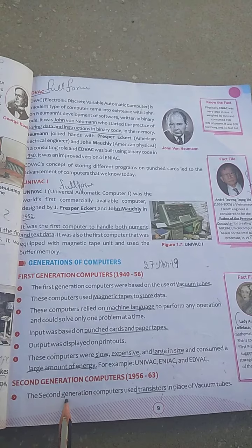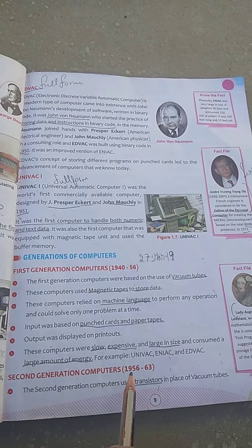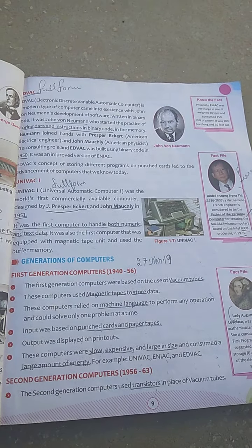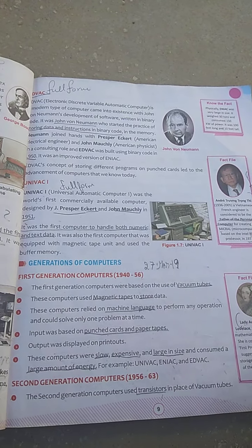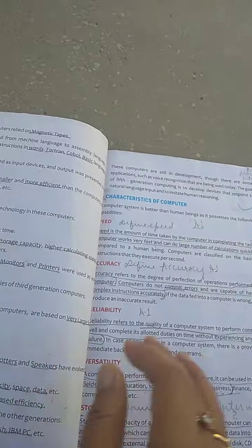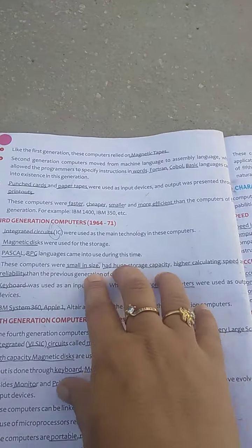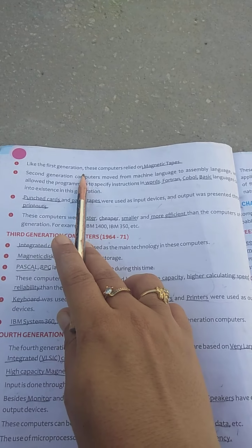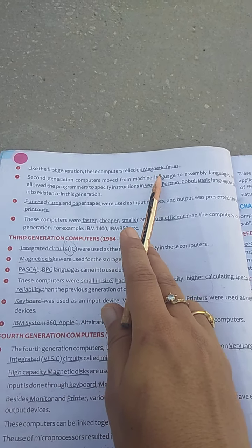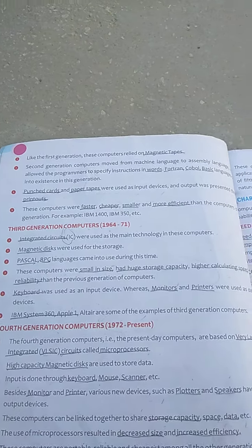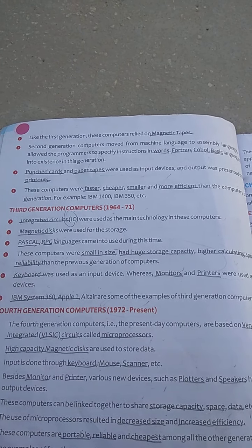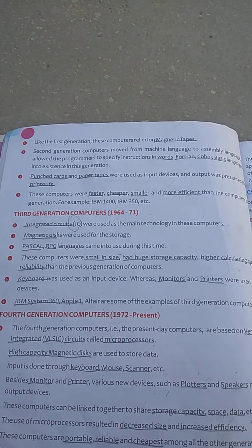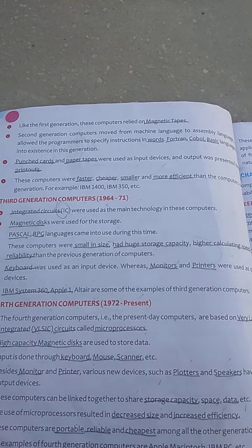The second generation of computers was from 1956 to 1963. These computers used the technology of transistors instead of vacuum tubes. Like first generation computers, these computers relied on magnetic tapes. Magnetic tapes are small, thin plastic tapes coated with magnetized material, and they are used for storing data.